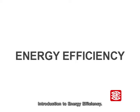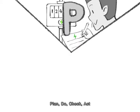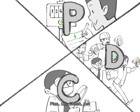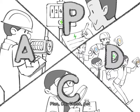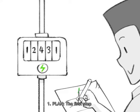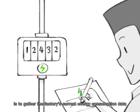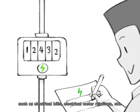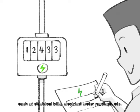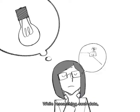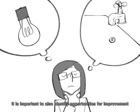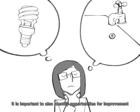Introduction to Energy Efficiency: Plan-Do-Check-Act. One, Plan. The first step is to gather the factory's current energy consumption data, such as electrical bills, electrical meter readings, etc. While researching such data, it is important to also identify opportunities for improvement and potential savings.